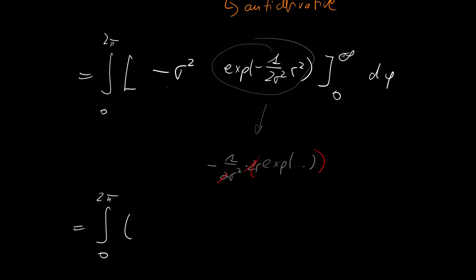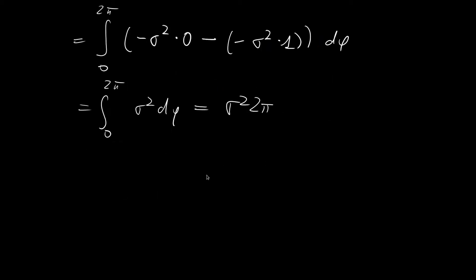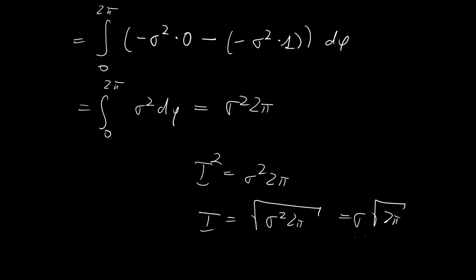Evaluating the limits: at r equals infinity, the exponential goes to 0, giving minus sigma squared times 0; at r equals 0, the exponential equals 1, giving minus sigma squared times 1. With the double negative, we get plus sigma squared. The remaining integration over phi from 0 to 2 pi, with no phi inside the integrand, simply multiplies by the interval length 2 pi. So I squared equals sigma squared times 2 pi, meaning I equals the square root of sigma squared times 2 pi, which is sigma times the square root of 2 pi. This is the normalization constant — the area under the unnormalized Gaussian — and we divide by it to normalize.